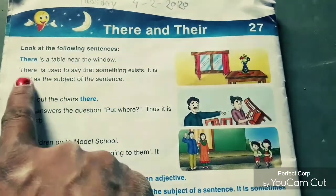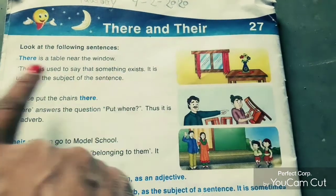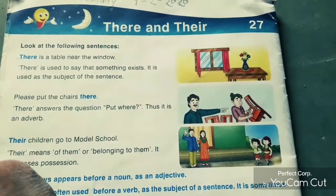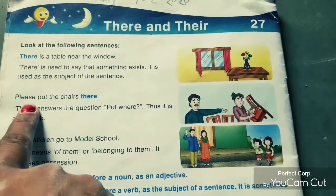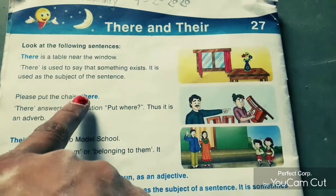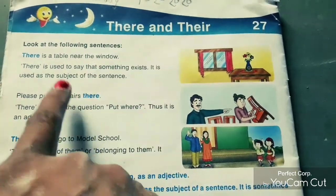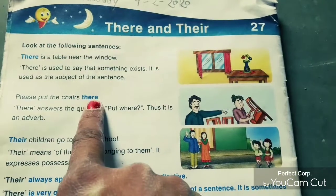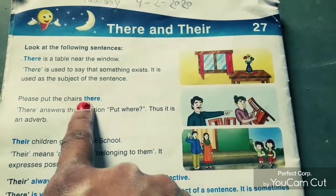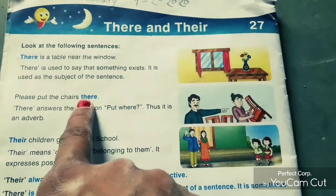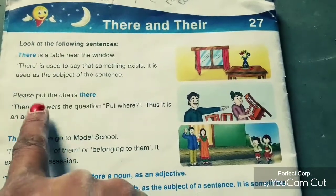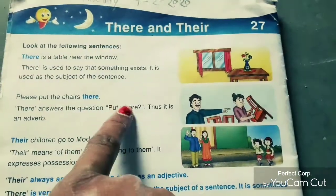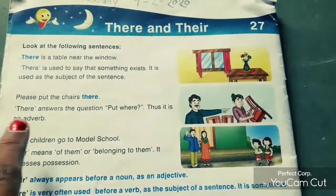Sometimes we also use 'there' as a subject of the sentence. Look at the second sentence: 'Please put the chairs there.' This means 'chair wahan rakho' — to tell about a place. 'There' answers the question 'where.' Where do we put the chair? The answer is: 'There, you put the chair.' Thus it is an adverb.